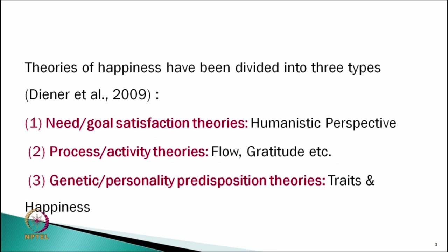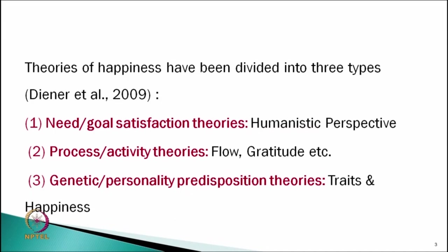Diener and his associates in 2009 categorized different theories into three categories. Some scholars focused on need and goal satisfaction theories, like the humanistic perspective. You can easily recall need hierarchical theory in which Abraham Maslow mentioned that first we fulfill our basic needs like physiological needs, safety needs, love-belonging needs, and then only we have self-esteem and self-actualization. We are growing once we fulfill our basic needs.